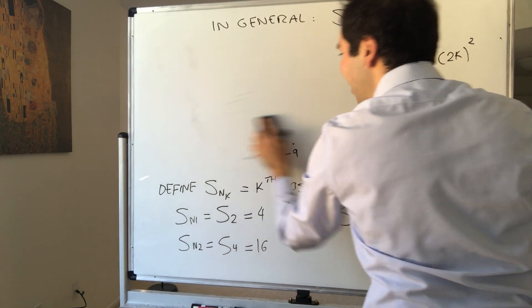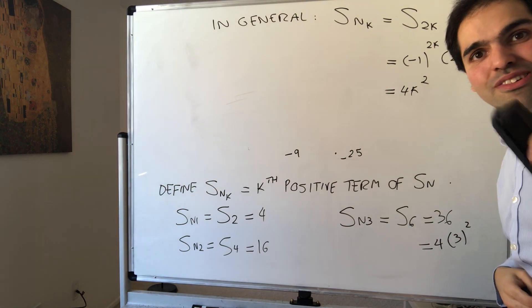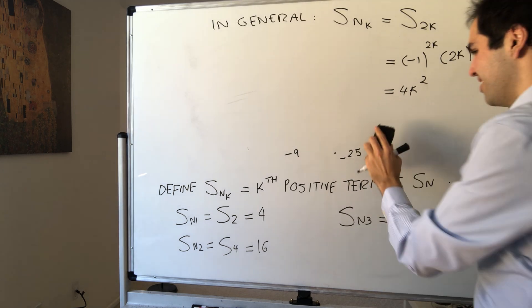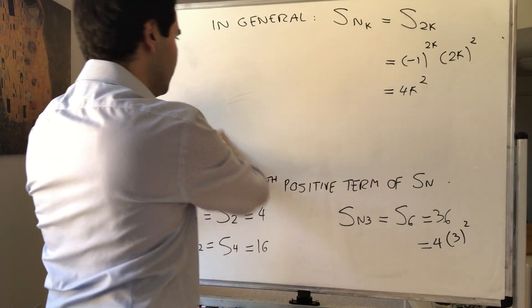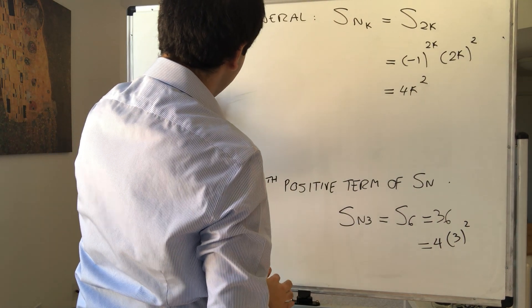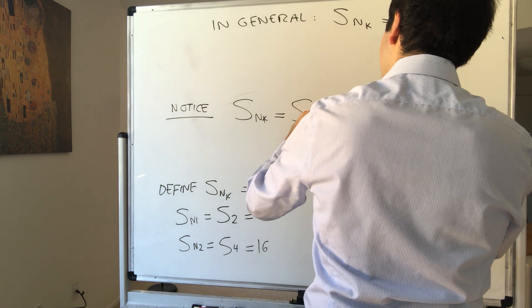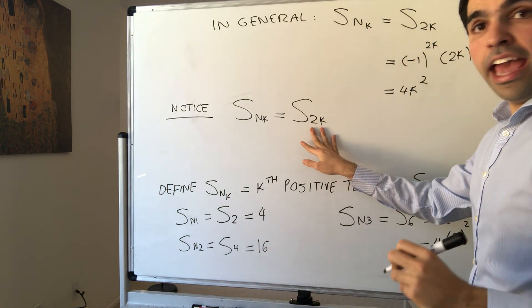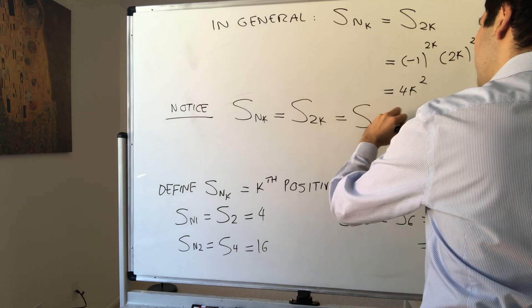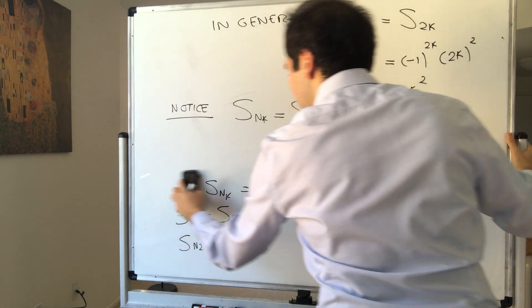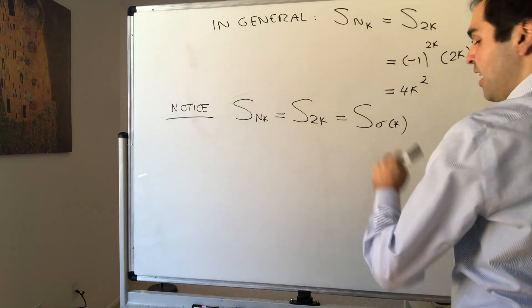But this is not why we're here today. Because it's great to find general values of the subsequence, but that's not the point, really. The point is to notice something here. Namely, what is Snk? What is S of 2k? But notice, 2k is just a function of k. So in other words, we can write this as S of sigma k, where sigma k is just a doubling function. So it's a function that takes k as its input and spits out 2k.